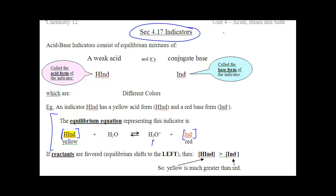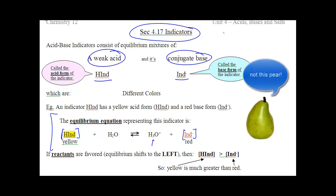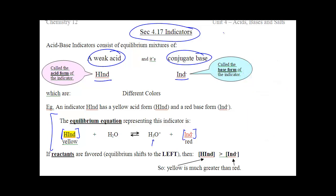In a nutshell, an indicator consists of two things: a weak acid and its conjugate base — its pair. I'm going to use the symbol IND for indicator. So HIND is the weak acid, or the acid form of the indicator, and the base form is IND minus. It's a conjugate base — it differs by an H+.